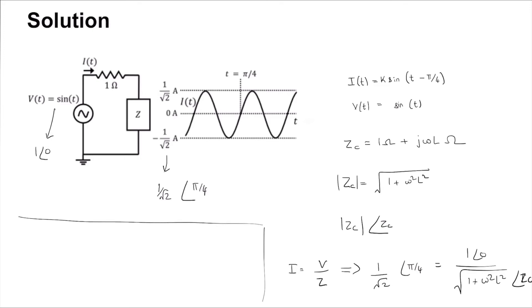If we equate only the magnitude terms, we get 1/√2 = 1/√(1 + ω²L²).